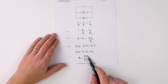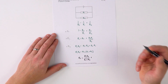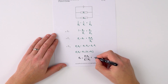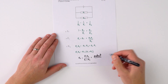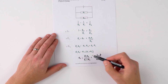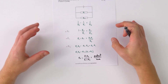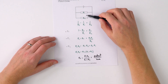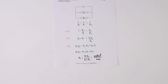Making RT the subject, we get RT equals R1·R2 divided by R1 plus R2. Another way of saying this is that RT equals the product of R1 and R2 divided by the sum of R1 and R2, and this is a quick way to find the combined resistance of two resistors in parallel.